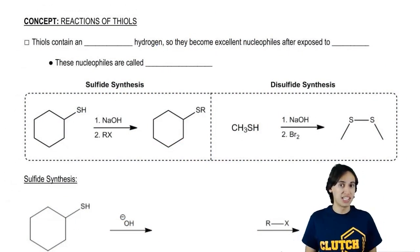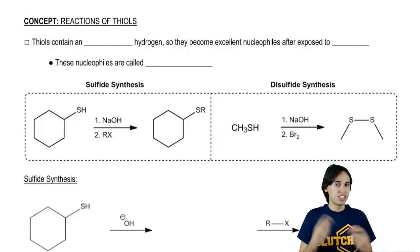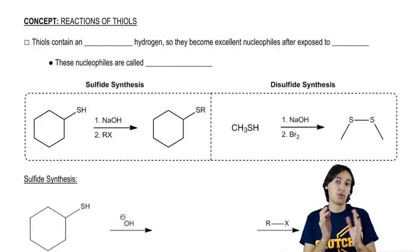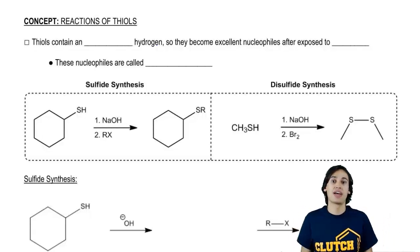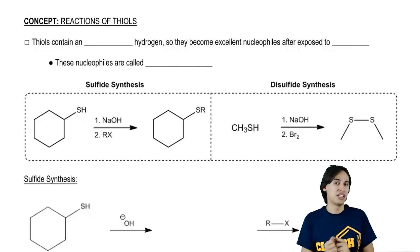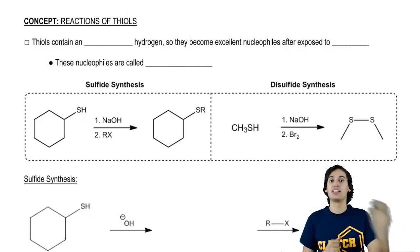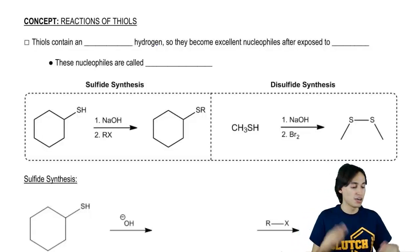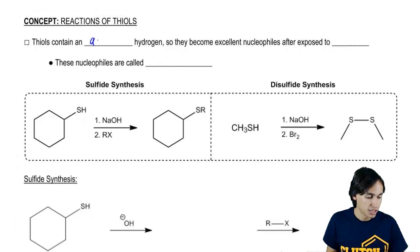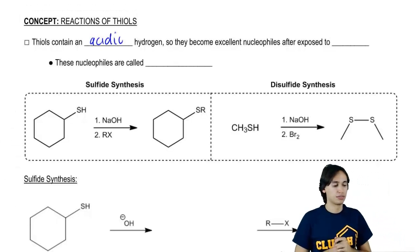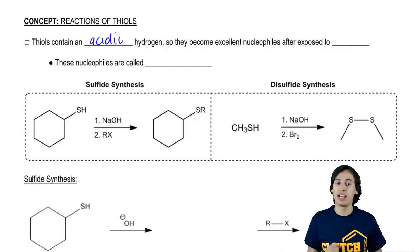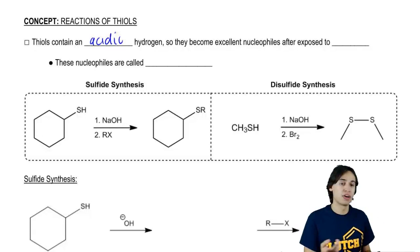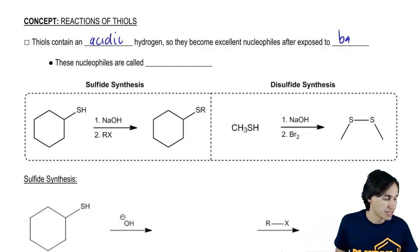Thiols are more acidic than a typical alcohol. If you guys think about it, that has to do with the fact that the sulfur is a little bit bigger in size and the size effect said that the bigger the molecules get, the easier it is to give up an H and get a lone pair. So thiols are going to contain a very acidic hydrogen. So what that means is that it's going to be easy to pull off that hydrogen and easy to make it a nucleophile after it's exposed to base.